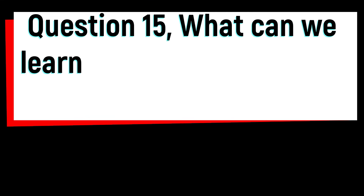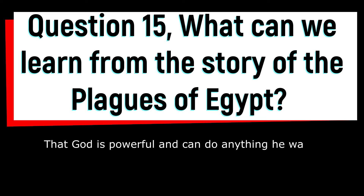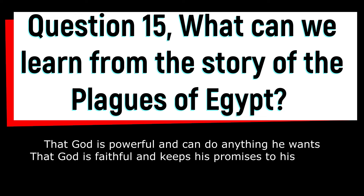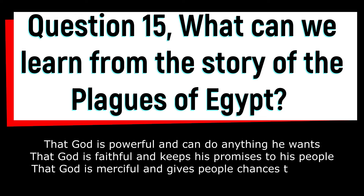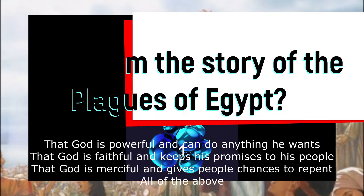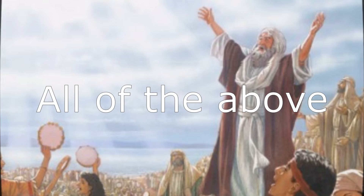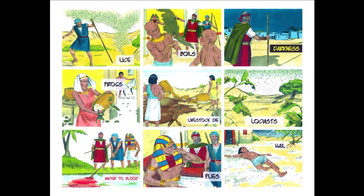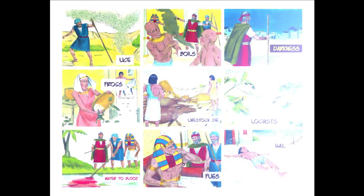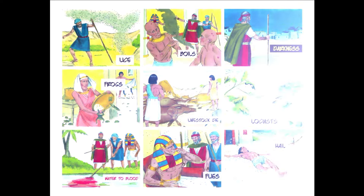Question 15: what can we learn from the story of the plagues of Egypt? That God is powerful and can do anything he wants; that God is faithful and keeps his promises to his people; that God is merciful and gives people chances to repent; or all of the above? The answer is all of the above. The story of the plagues of Egypt teaches us many things about God's character and actions. He is powerful and can control nature and history. He is faithful and keeps his covenant with Abraham and Isaac. He is merciful and gives Pharaoh many opportunities to change his mind and obey him.